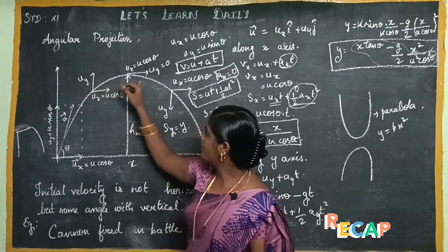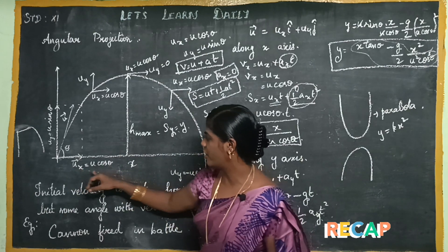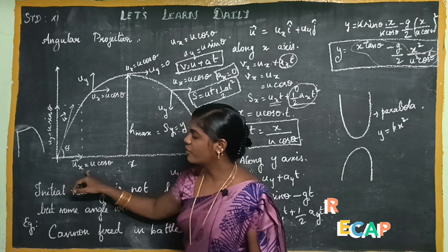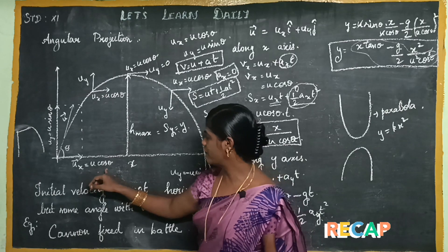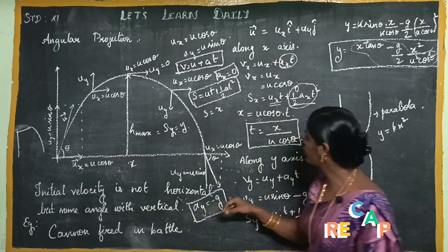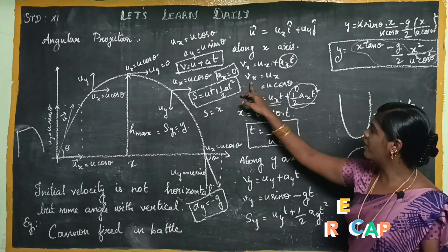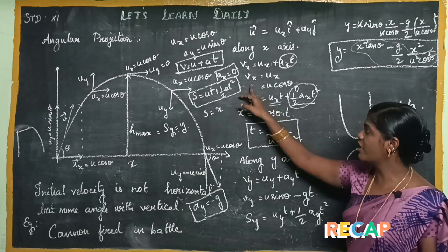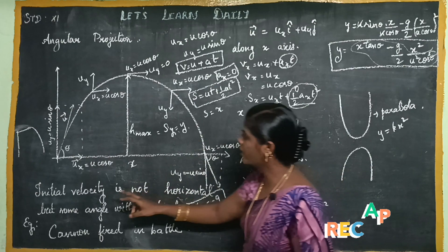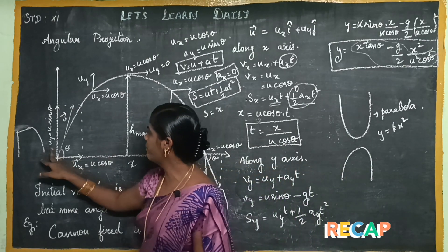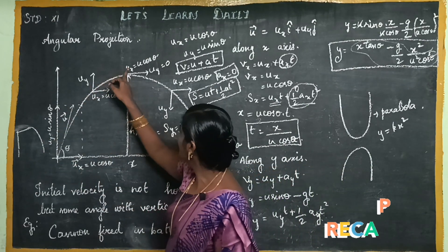At the same point, the velocity changes, but it is horizontal. In the x-axis, the velocity is u cos theta. This is the first equation of motion. In the second equation of motion, we will solve for the final velocity. Vx is equal to ux, that is uy. The u sin theta will be at maximum equal to 0.